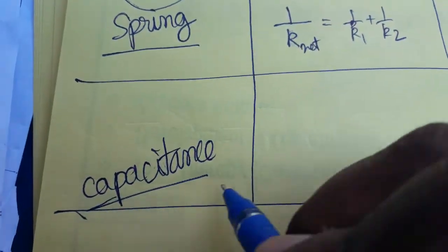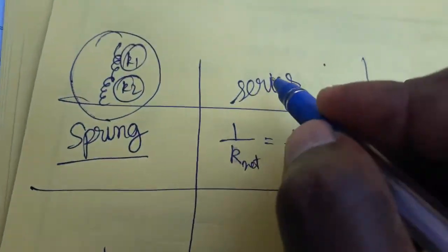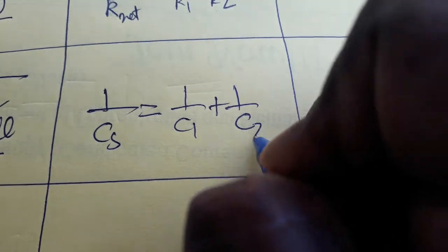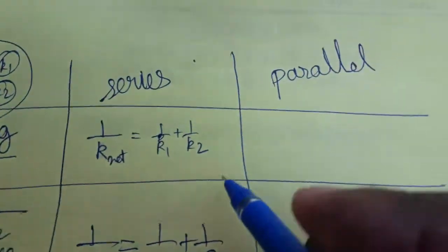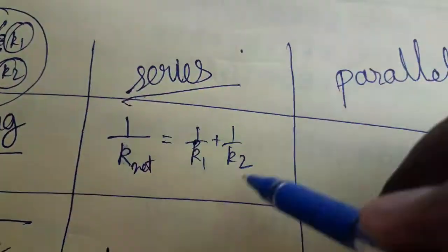The same thing for a capacitor connected in series — two capacitances c1 and c2 connected in series: 1/Cs = 1/c1 + 1/c2. And for resistance connected in series, the resistance symbol will be like this — r1 and r2 — two resistances connected in series: Rs = r1 + r2.